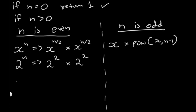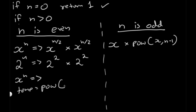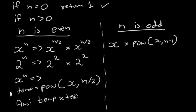So for the even case, x to the power of n equals a temporary variable temp, which stores the value of calling the power function on x, n/2. Our answer is then temp multiplied by temp. This is faster because we make fewer recursive calls — we only call the function one time instead of two.